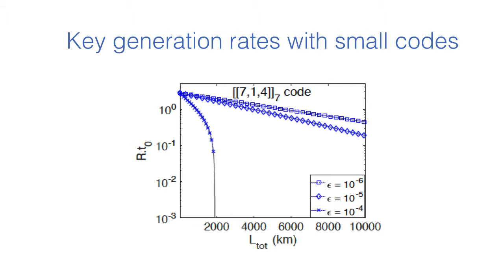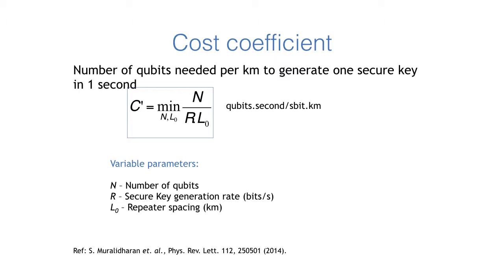Here we show the performance of key generation rates in the presence of small operation errors. We see that as operation errors go over 10 to the power minus 4, key generation rates reduce rapidly.